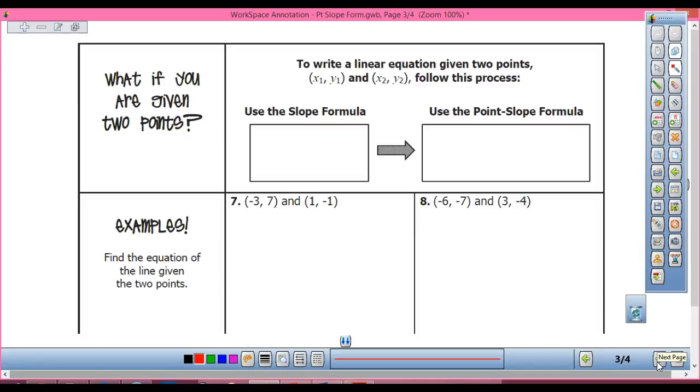Okay, so now if I have two points, what piece of information am I missing? I'm missing the slope, but do I know how to find the slope with two points? I do. What's my formula? It's rise over run on a graph. Y₂ minus Y₁, X₂ minus X₁, and once I have my slope, then I can put it into point-slope form.